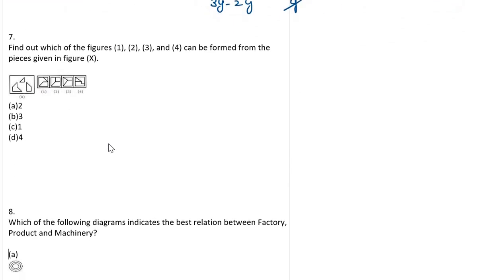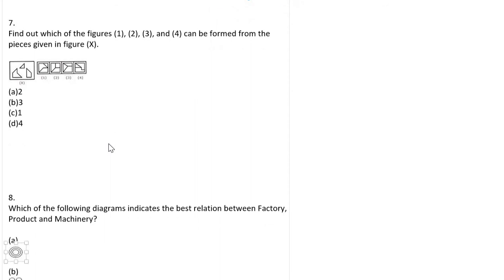Find out the figures that can be formed from the given piece of the figure. This is just like a shape. One turning is here, so some options are not correct. The answer is the first one — the correct absent shape.